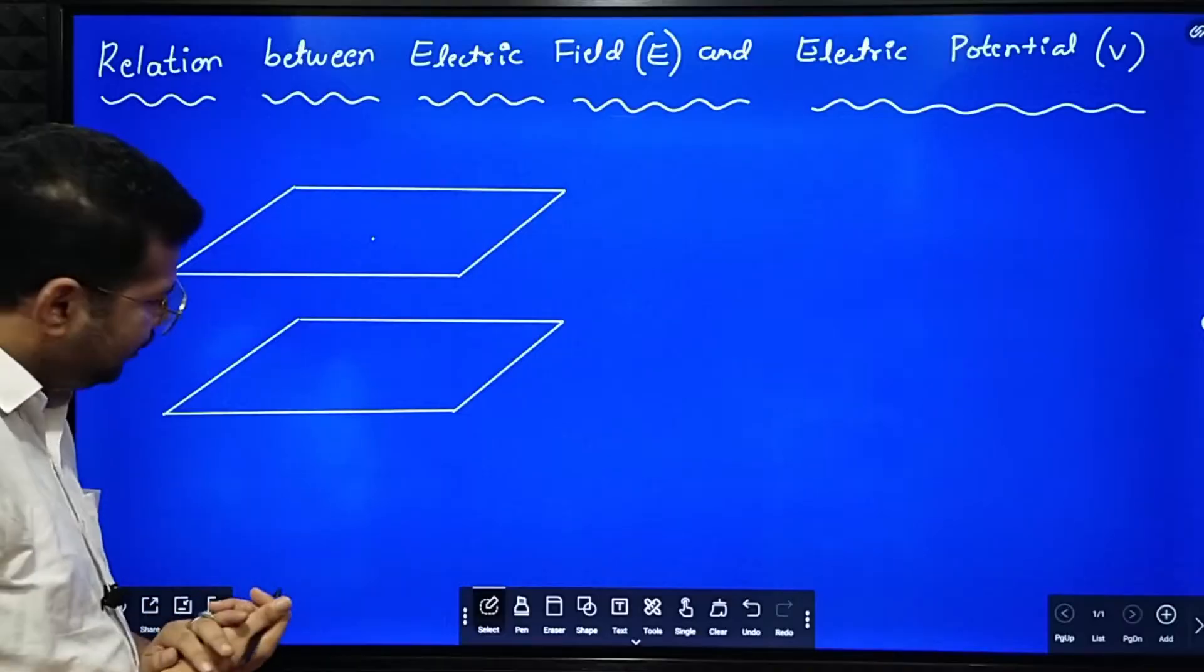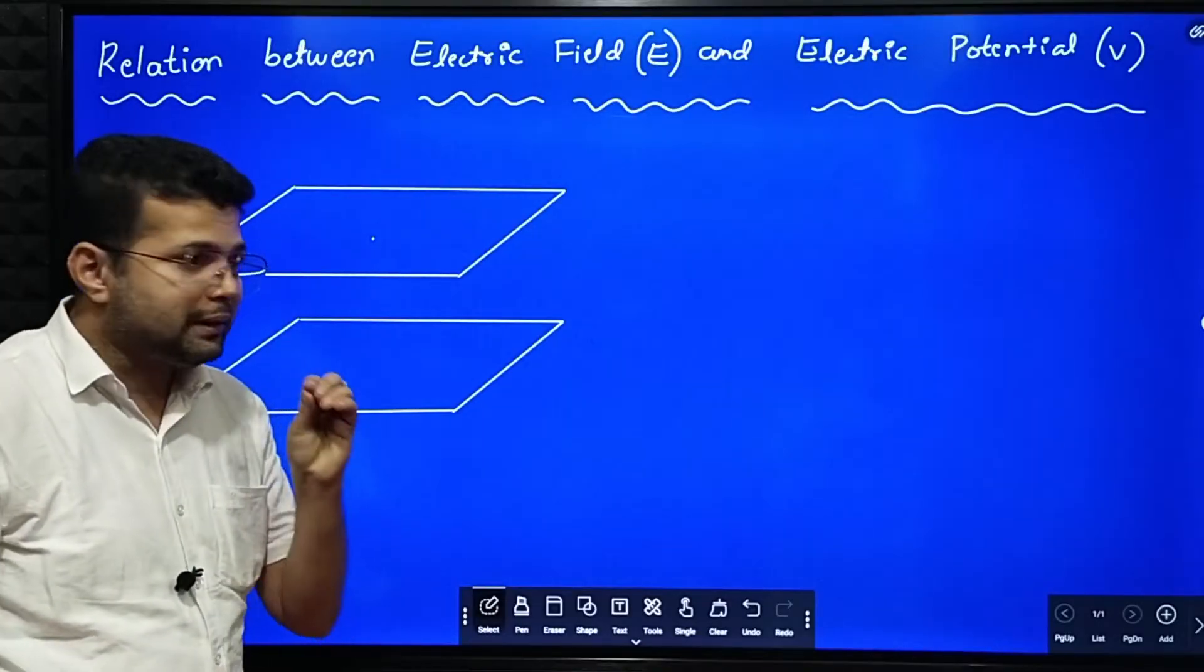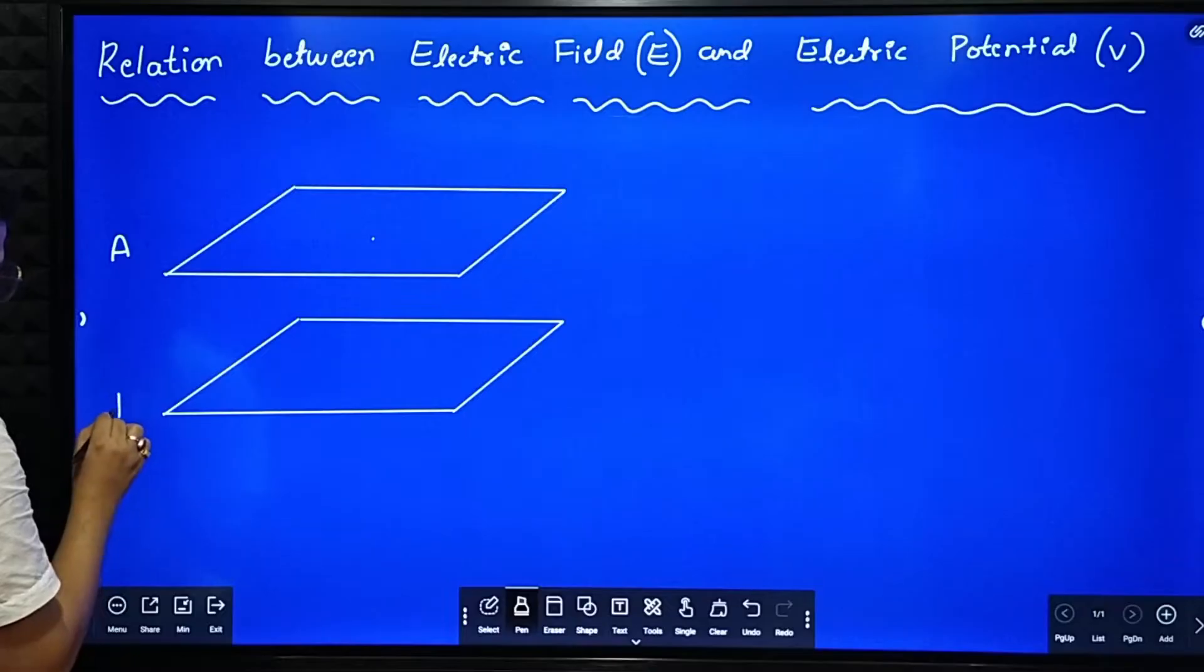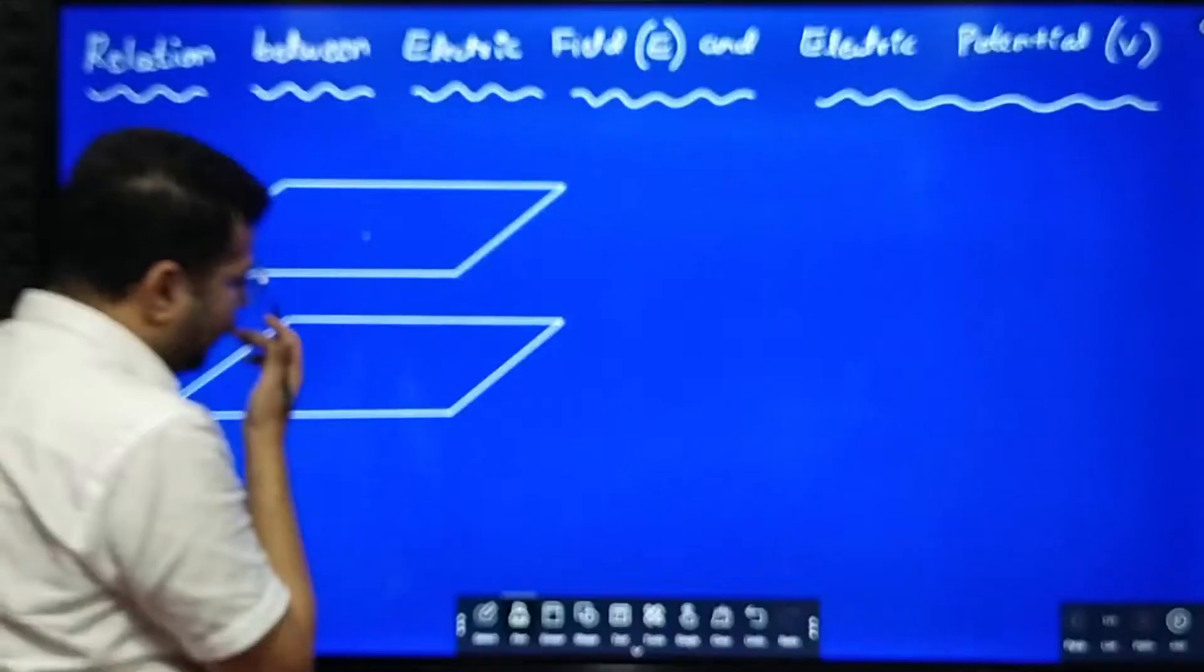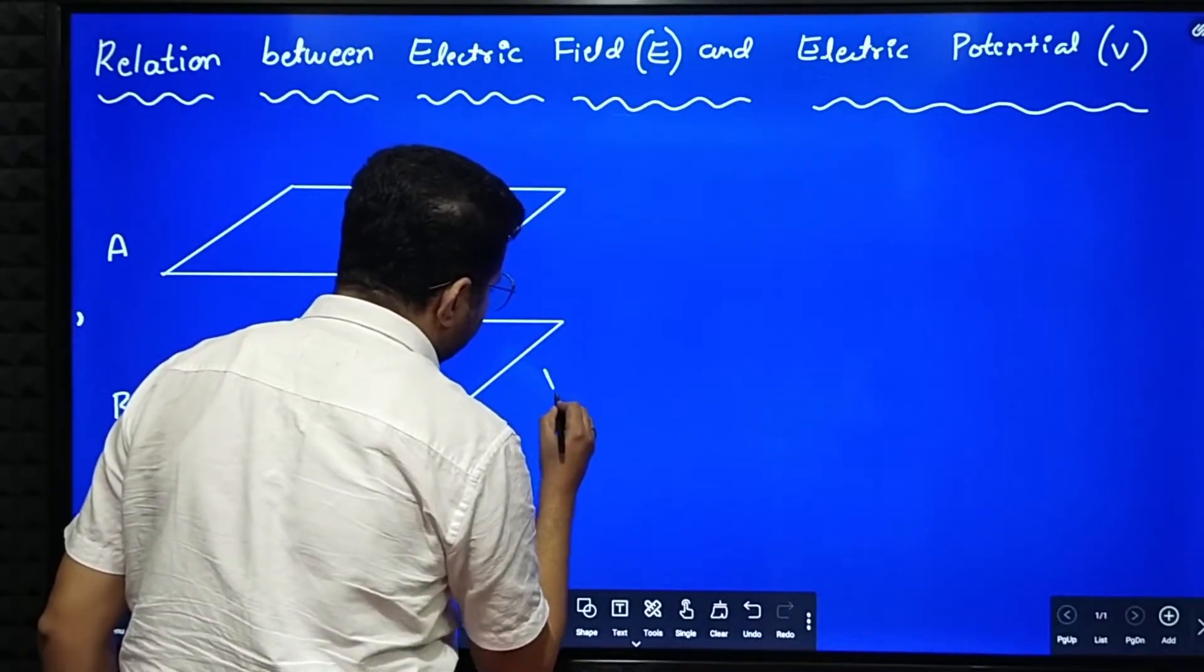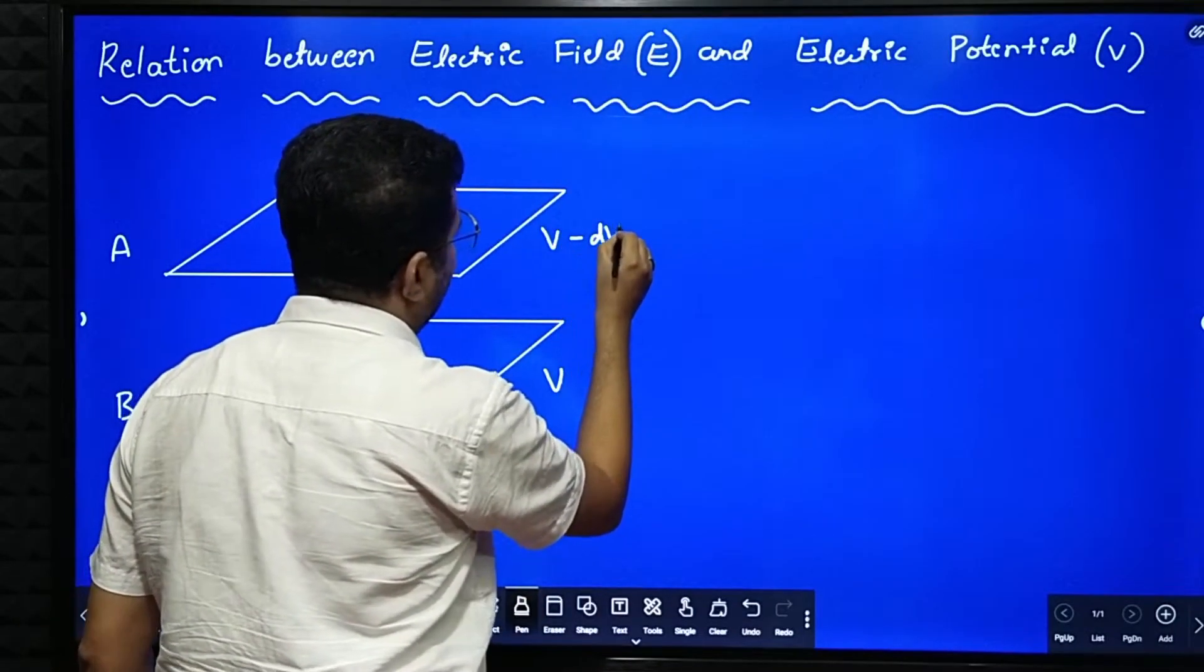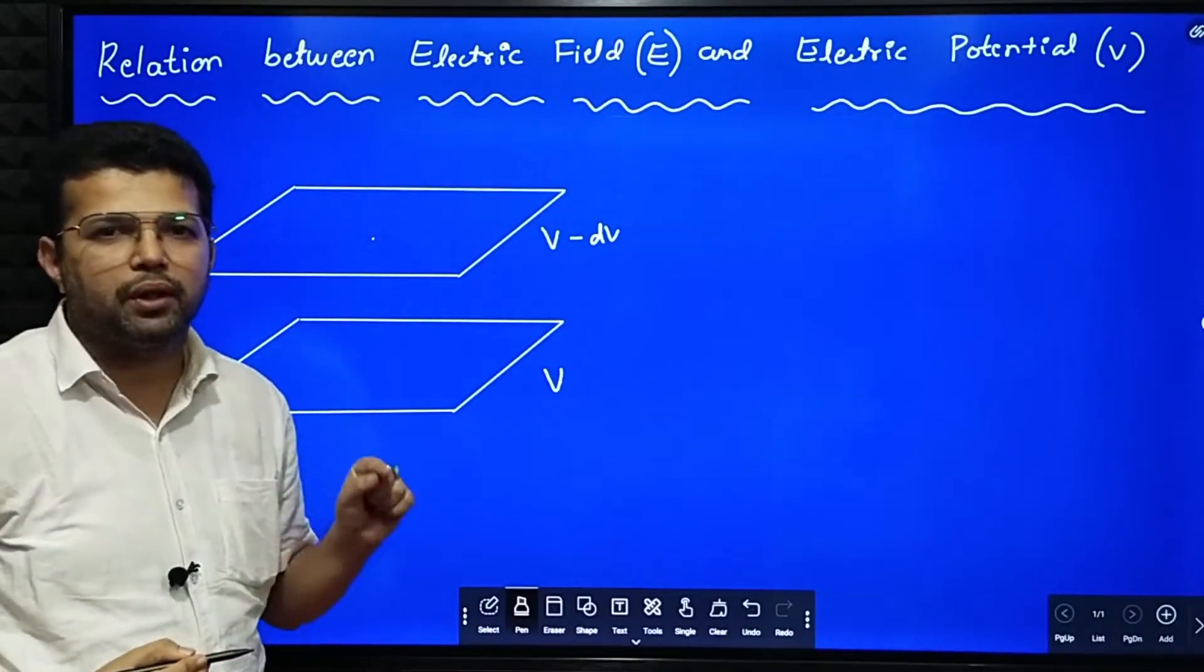So here what I have done is I have considered two equipotential surfaces. Say this equipotential surface I call it as A, another equipotential surface I call it as B. Say the potential of equipotential surface B is V. Potential of equipotential surface A is V minus dV. There is a small difference between electric potential between those two equipotential surfaces.